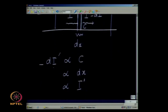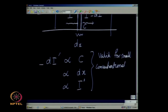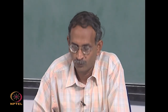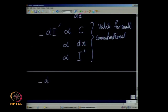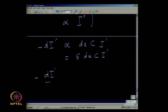These three observations are valid for small concentrations, less than something like 0.1 moles per liter or even lower. The lower the concentration, the better the approximation. This proportionality can be expressed as: minus di prime is equal to a proportionality constant epsilon multiplied by dx times c times i prime. Therefore, what you have is minus di prime divided by i prime equals epsilon times c times dx.